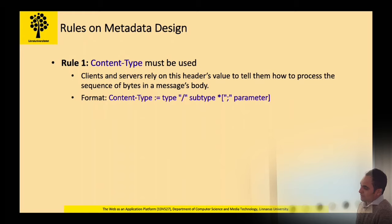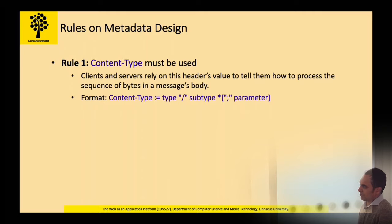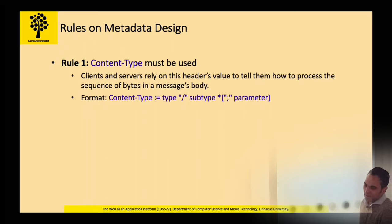Today we will cover around 23 rules. Combined with the 27 rules from the first class, that makes about 50 rules which form a good foundation for your assignment. The first rule is that Content-Type must be used by the server in the response headers, particularly when providing a resource to the client.